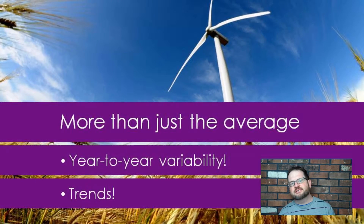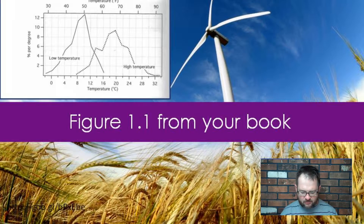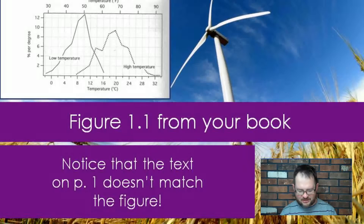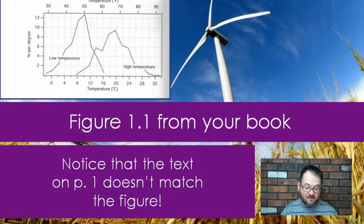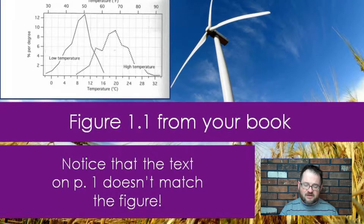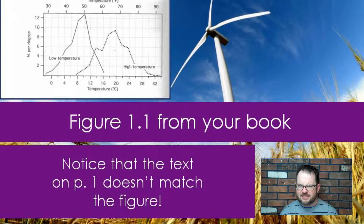To illustrate the importance of variability, your book talks in the first couple of figures about the climate of Fairbanks, Alaska. I'm not exactly sure why the author chose Fairbanks, and I've scanned in figure 1.1 from your textbook. Right off the bat, unless I was just missing the point, it appears that on page 1 when he's describing figure 1.1, he seems to be talking about a different figure altogether. So let's look at the figure I've scanned in and work with that, not what he's talking about in the text.